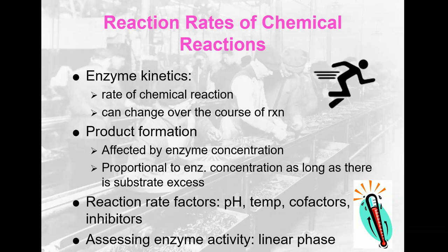Let's talk about reaction rates of chemical reactions. Enzyme kinetics refer to looking at the rate of chemical reactions, and that rate can change over the course of the reaction — sometimes slower at the beginning, but once it gets going, the rate increases significantly. Product formation is affected by enzyme concentration and is only proportional to enzyme concentration as long as there is substrate excess. Obviously, if you run out of substrate, you're going to run out of product.